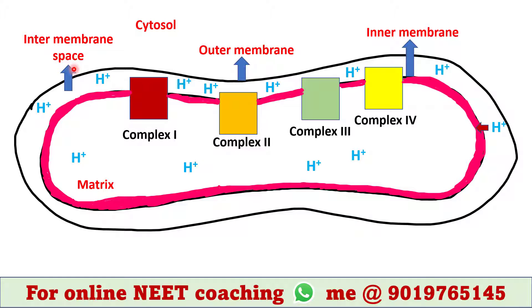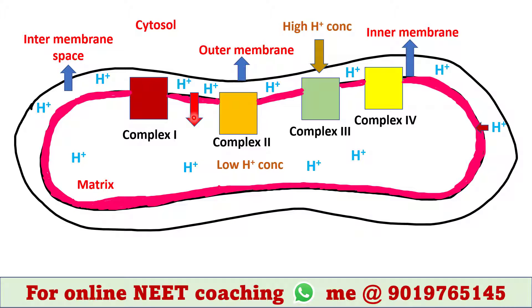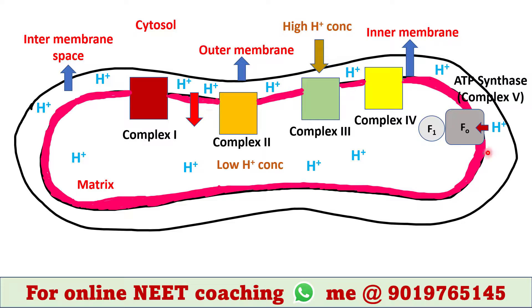In simple terms, the concentration of protons is much higher in the intermembrane space compared to the matrix of the mitochondria. Due to this concentration gradient, protons tend to flow back into the matrix to equalize proton concentration on both sides. However, to do so, protons must first cross the inner membrane, and they do this through a specific enzyme called ATP synthase.